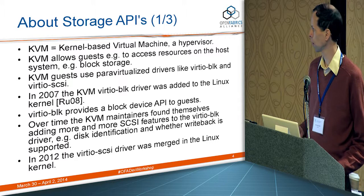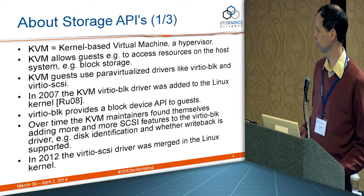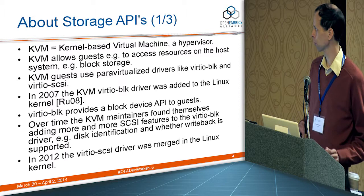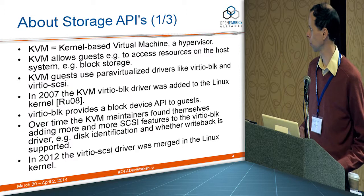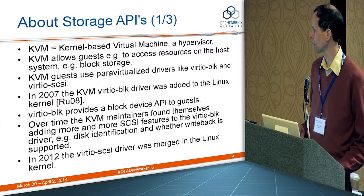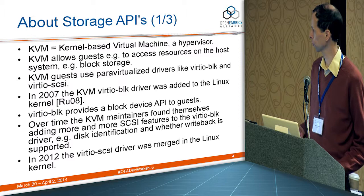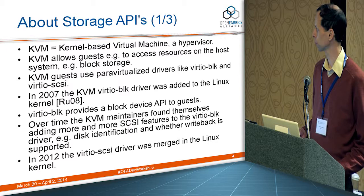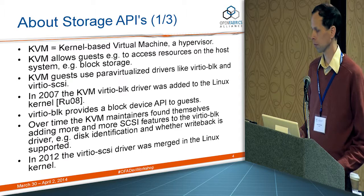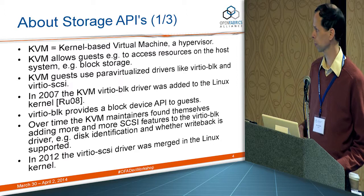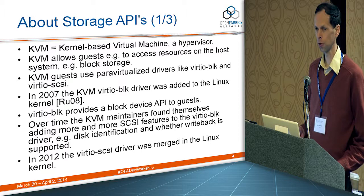Regarding storage APIs, I'd like to start with an example from KVM. KVM is the kernel-based virtual machine and a hypervisor for Linux. The KVM hypervisor allows guests — the virtual machines — to access resources on the host, like networking and block storage. To allow that, KVM guests use a para-virtualized driver. The name of that driver is VirtualBlock or VirtualSCSI. VirtualBlock is the oldest one, added in 2007 to the Linux kernel by Rusty Russell. That driver provides a block device API to the guests and communicates over the hypervisor bus to the host.